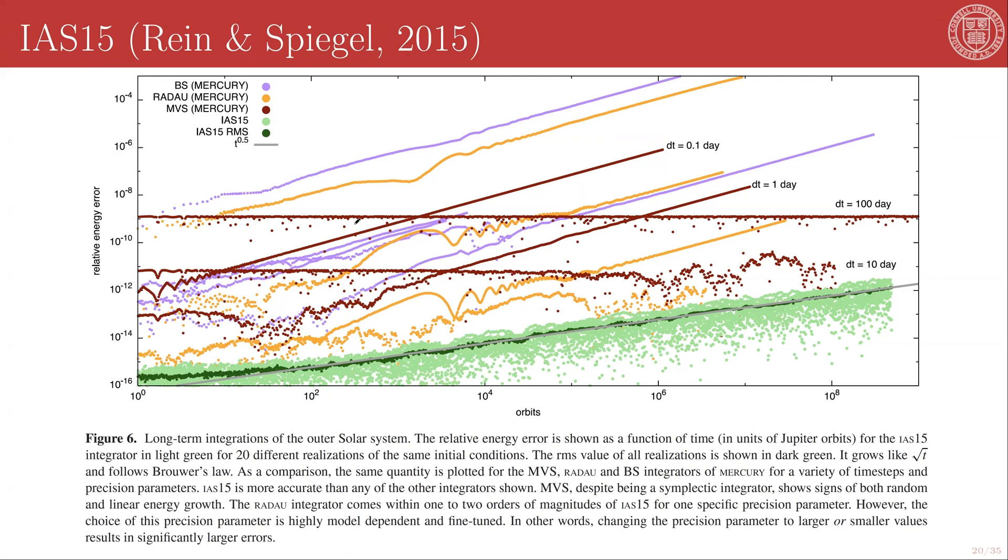Here I am reproducing a single result from this paper, which shows the performance of various integrators on the problem of the long-term integration of the outer solar system, that is, the gas and ice giants of the solar system, out to hundreds of millions of Jovian orbital periods. This is plotting the relative energy error, so you can think of this as the accumulation of error in the total energy of the n-body system. And the various integrators that are being considered are IAS15, the 15th order Gauss-Radau scheme, as well as a variety of integrators built into the Mercury software package, which was Chambers' original hybrid symplectic package.